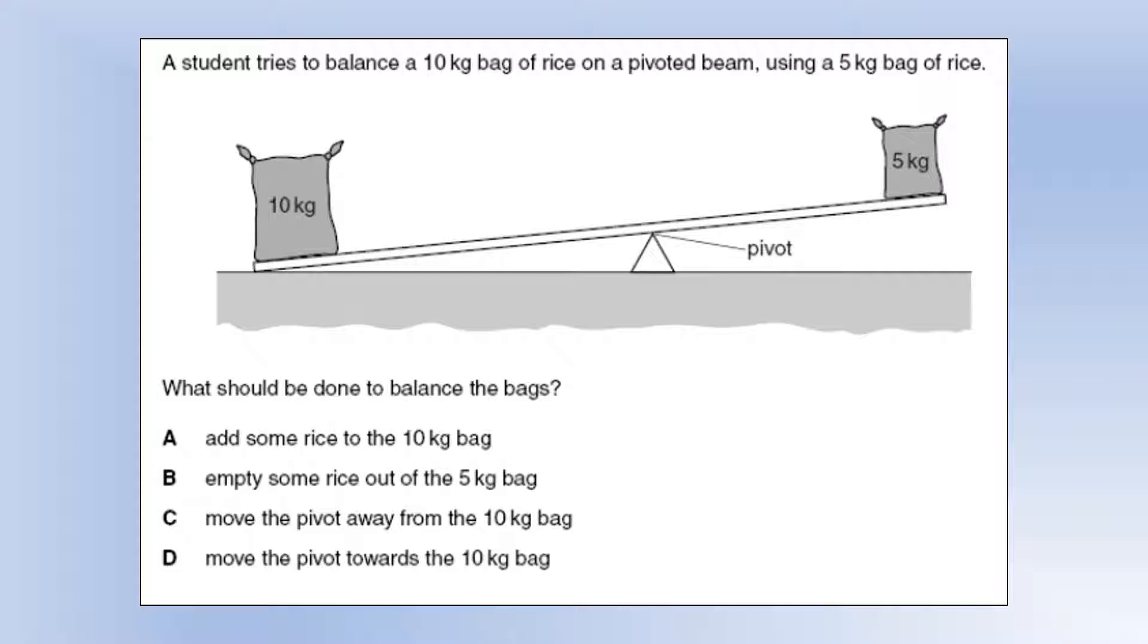If we add some rice to the 10 kilogram, that's going to increase the anti-clockwise moment, so that's not going to help. If we empty some rice out of the 5 kilogram bag, that's not going to help either. Move the pivot away from the 10 kilogram bag? No, that would increase the moment. Move the pivot towards the 10 kilogram bag? Yes, that would help. That would decrease the moment of the weight force of the 10 kilogram bag and increase it for the 5 kilogram bag. So that's perfect.